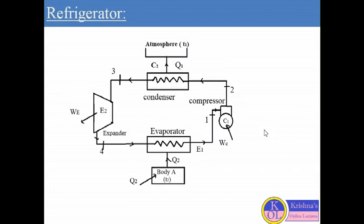The refrigerant which evaporates in the evaporator does so at a temperature lower than T2 because of absorbing the latent heat of vaporization from body A. This is process 4 to 1.